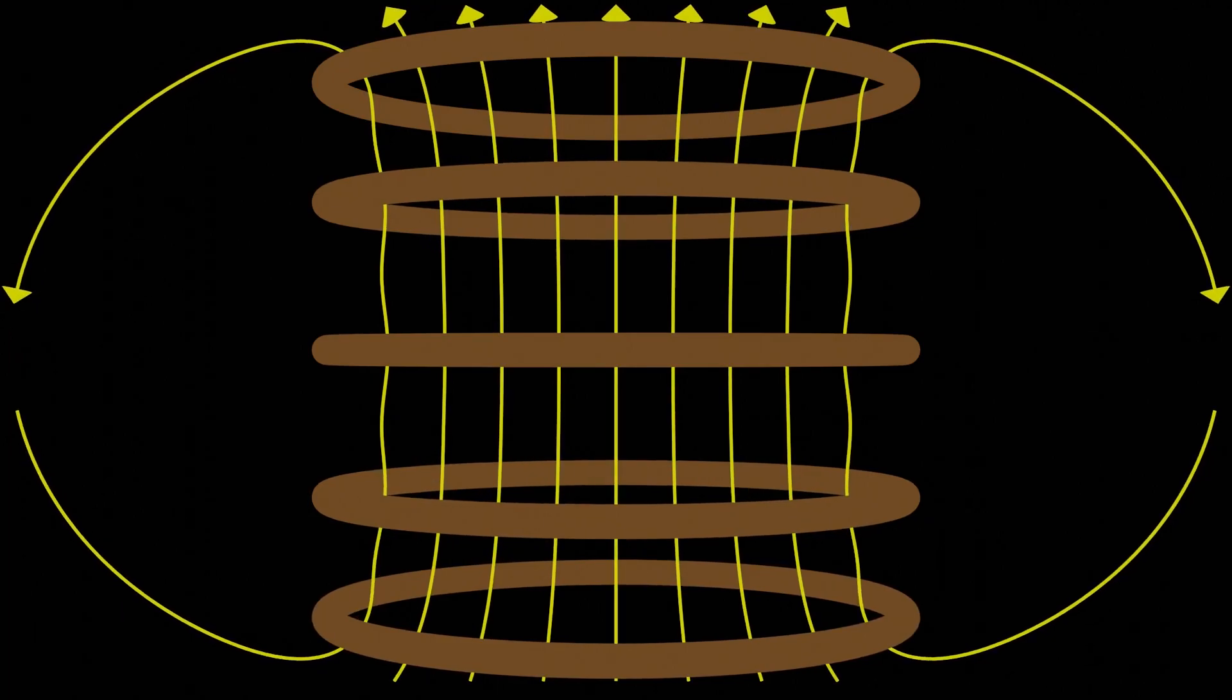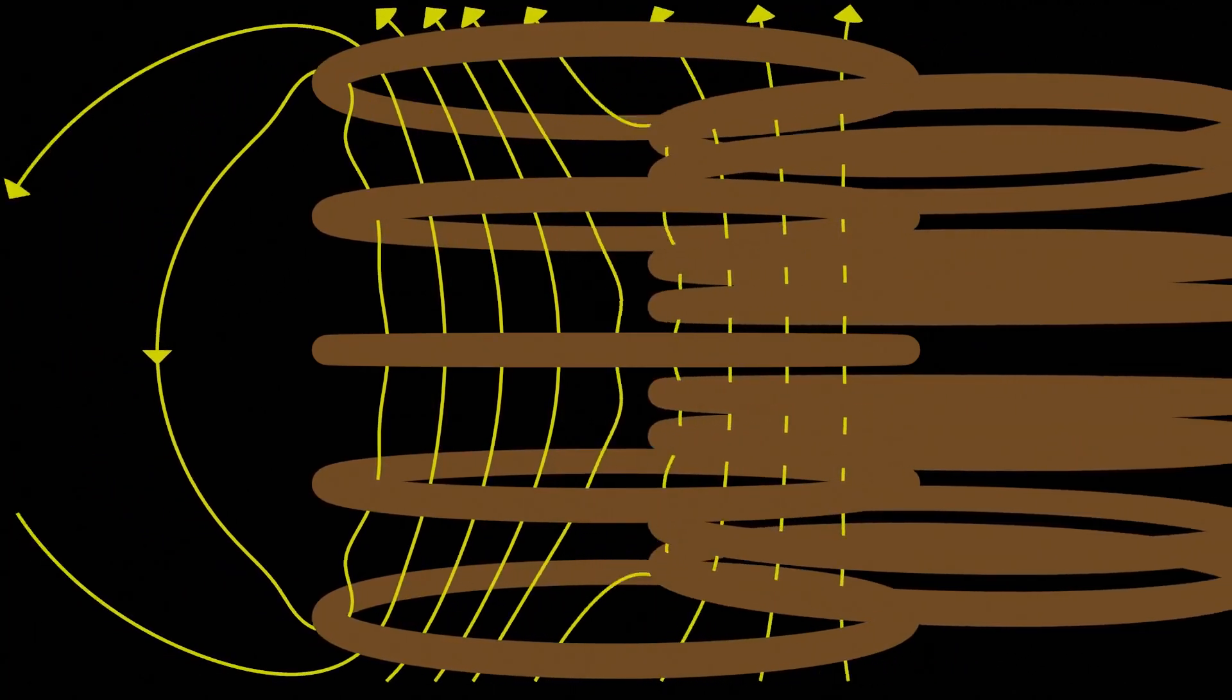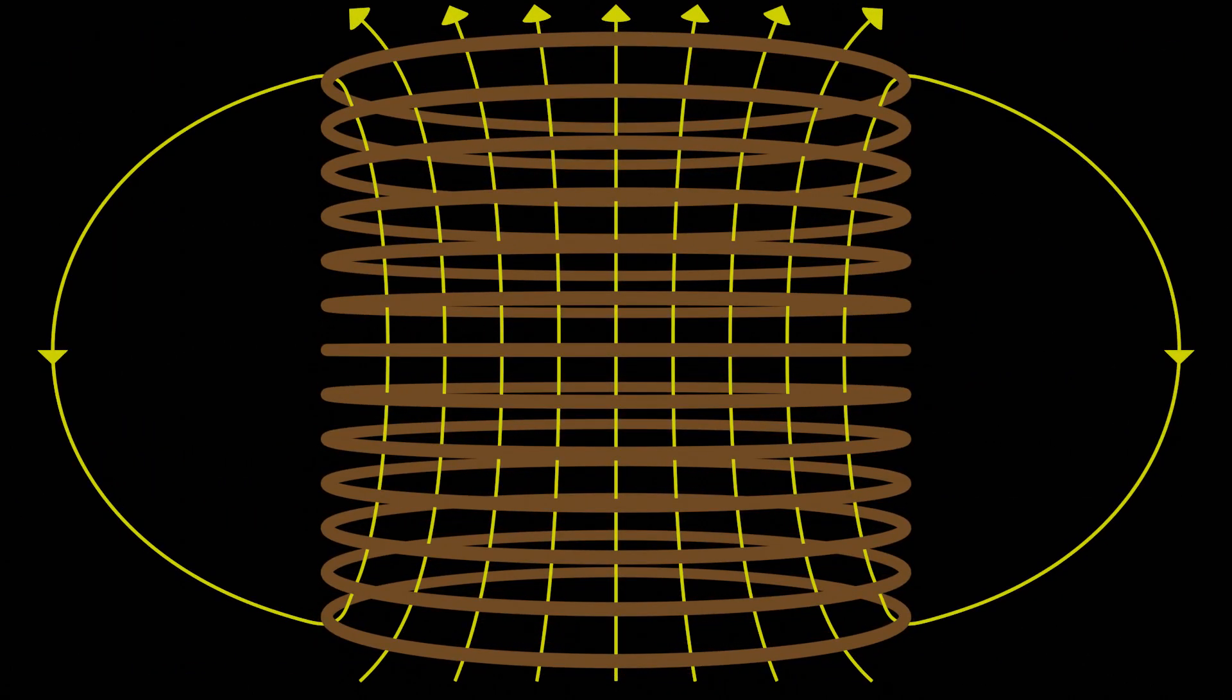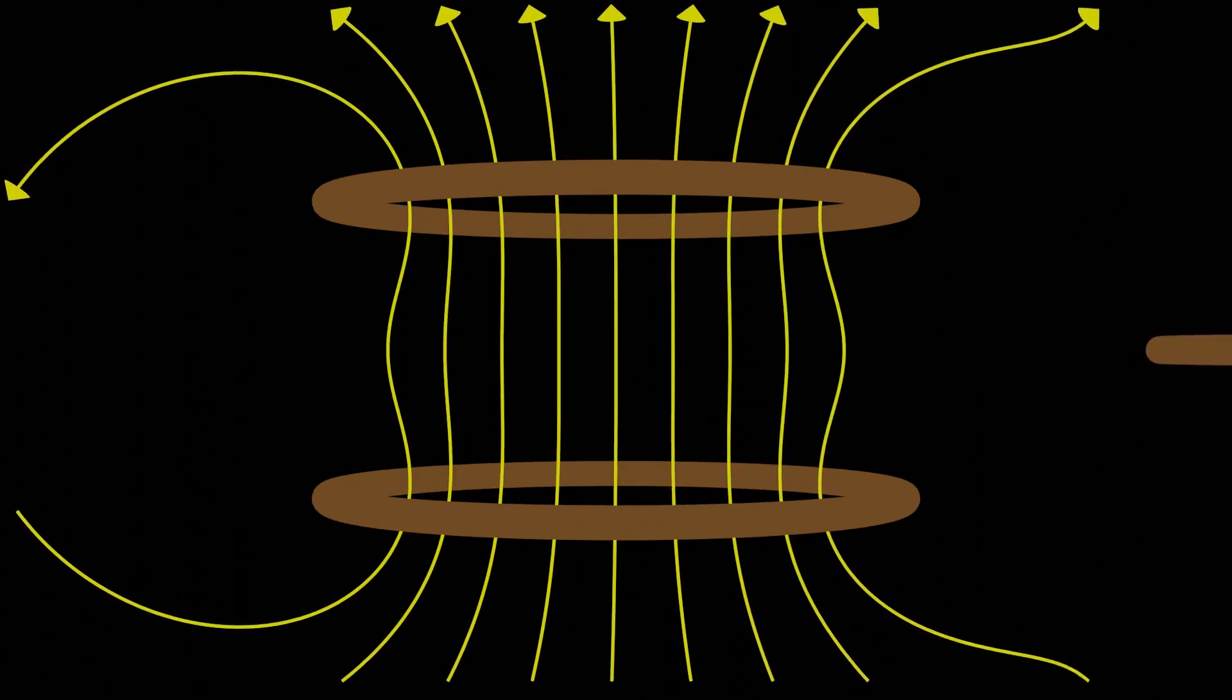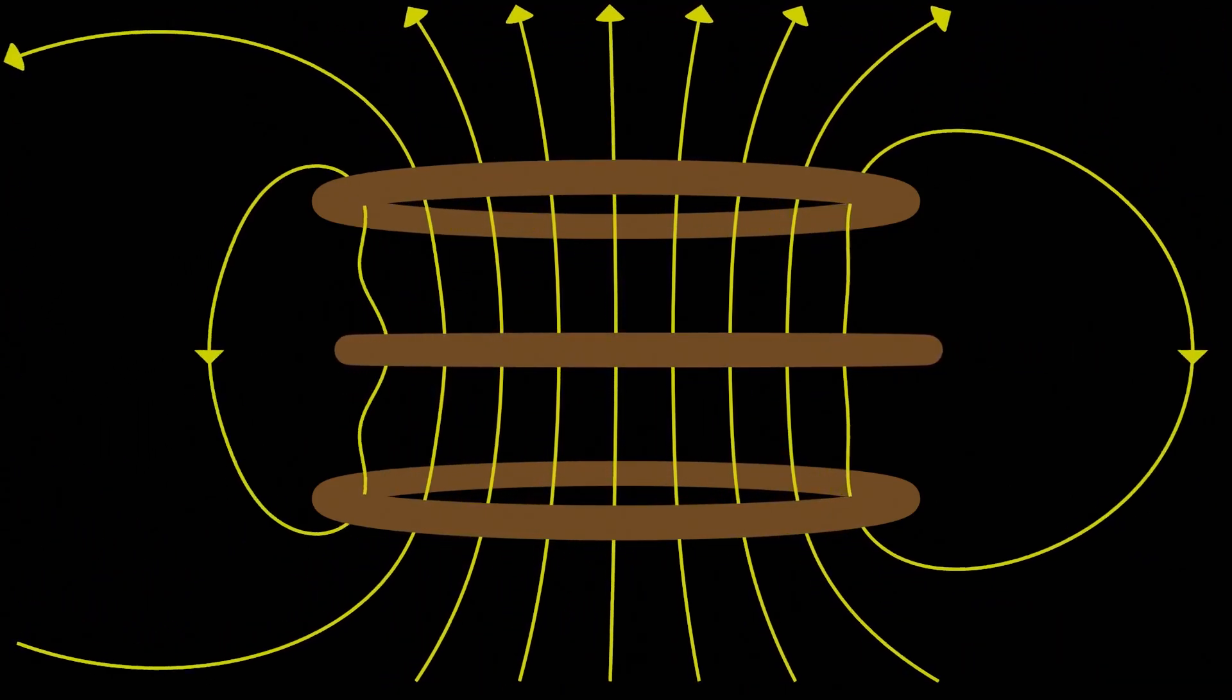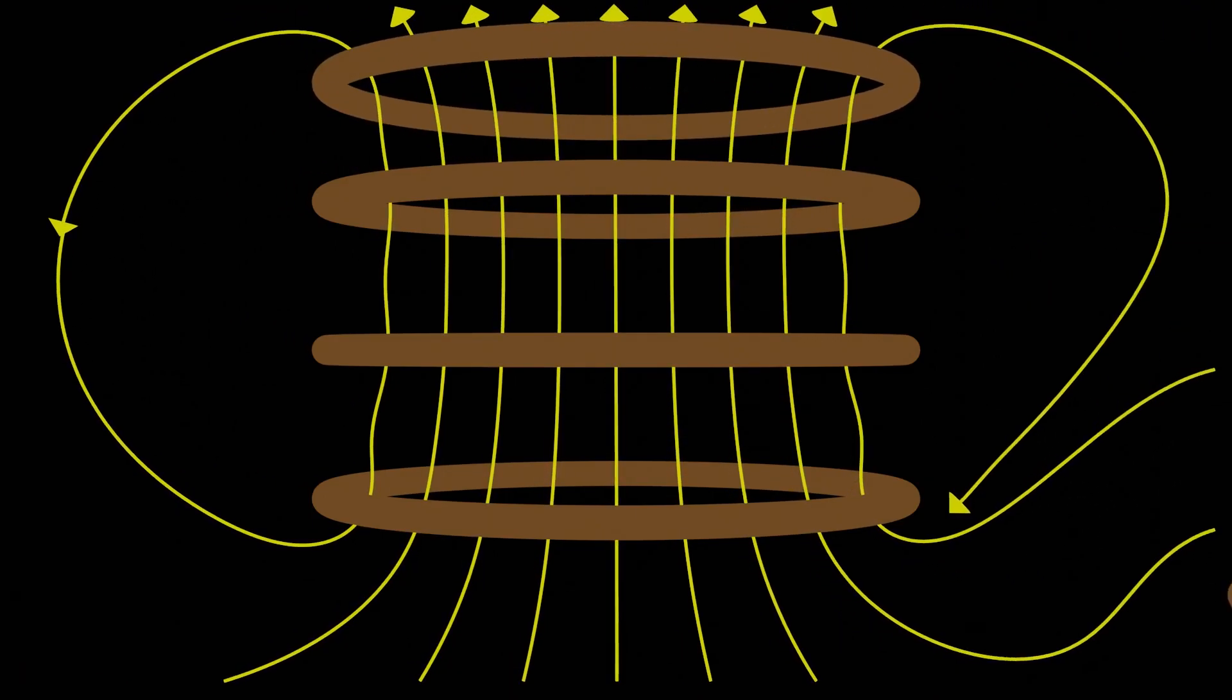And in the limit, as we add a huge amount of thin current loops and squish them really close together, the field lines between the loops become almost perfectly vertical. So where am I going with all this? Doing something like this in real life, just taking a bunch of separate circular current loops and stacking them on top of one another, is not really something you would see in practice. But this is very similar to something else that we see a lot in practice.